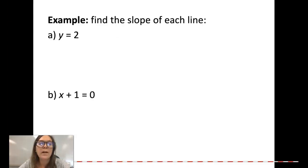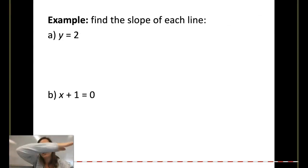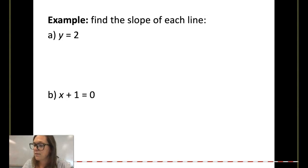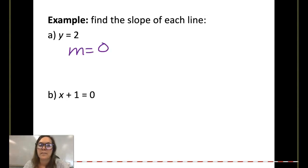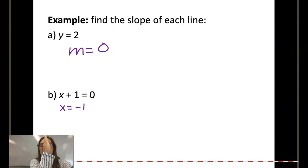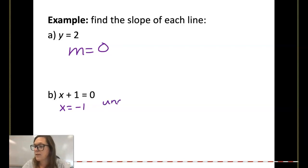What's the slope of the line y equals 2? We just went over this — it's a horizontal, flat line, so the slope is 0. And x plus 1 equals 0 is the same as x equals negative 1, which is a straight up and down line, so we have undefined slope.